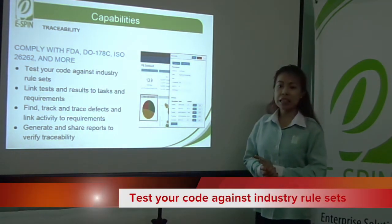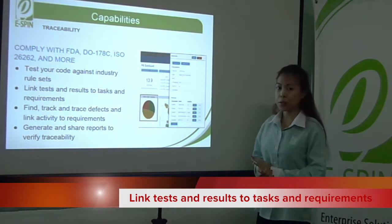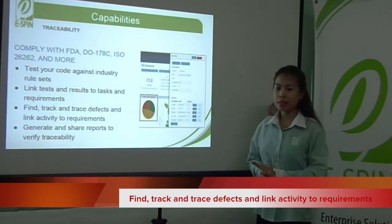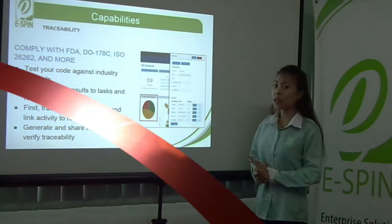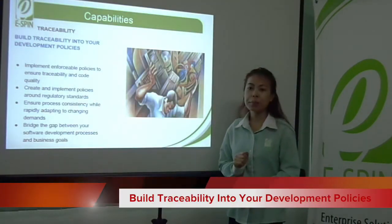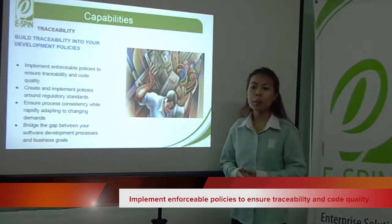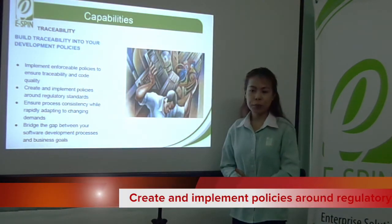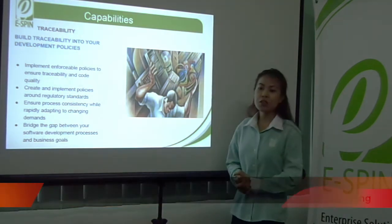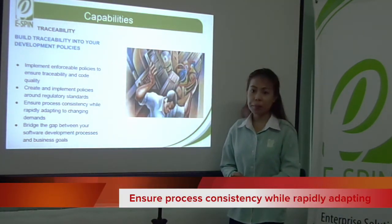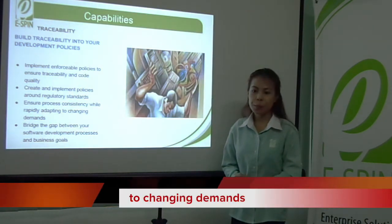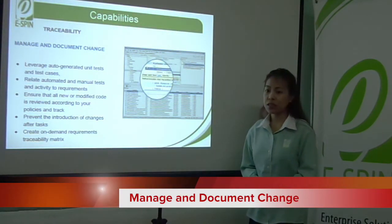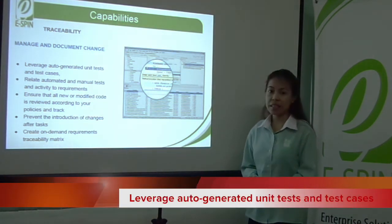Test your code against industrial rule sets. Link tests and results to tasks and requirements. Find, trace, and link defects and activity to requirements. Generate and share reports to verify traceability. Build traceability into your development policies. Implement enforceable policies to ensure traceability and code quality. Create and implement policies around regulatory standards. Ensure process consistency while rapidly adapting to changing demands. Bridge the gap between your software development processes. Manage and document change, and leverage auto-generated unit tests and test cases.